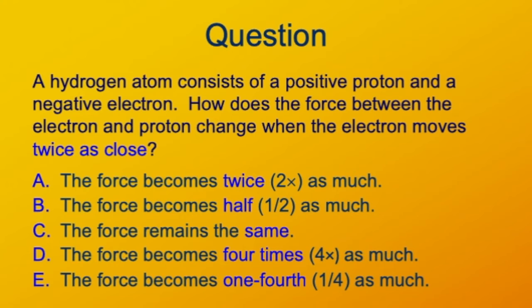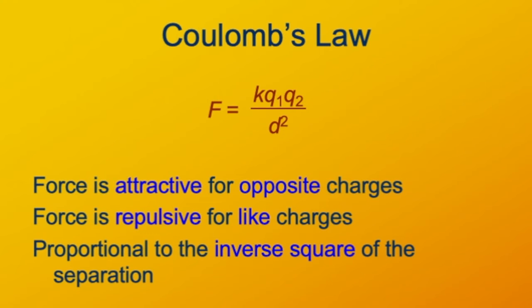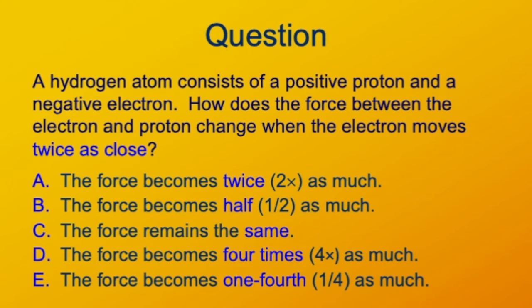Looking at the formula, the numerator isn't changing — K is a constant and Q1, Q2 aren't changing. The denominator is what's changing: D becomes half what it was, so D squared is one-half times one-half, which is one-fourth. One-fourth in the denominator means four times the result. So the force increases by a factor of four when the distance between the interacting objects decreases by a factor of two.